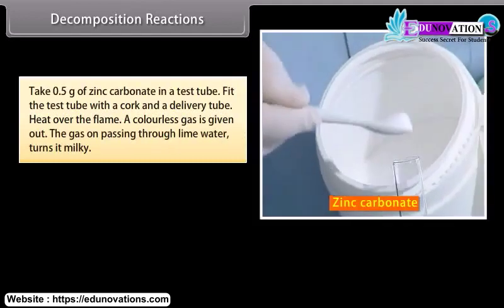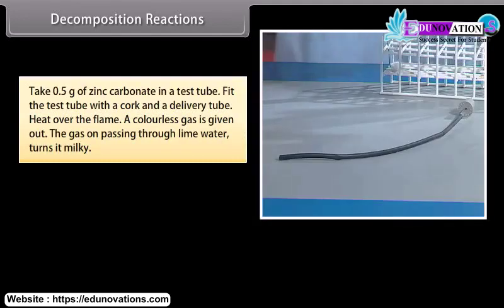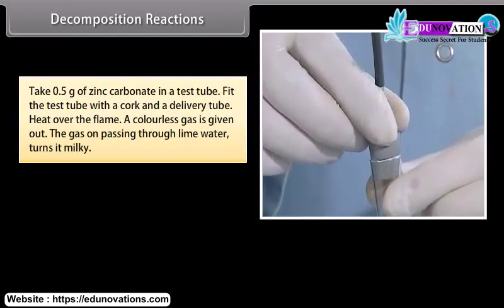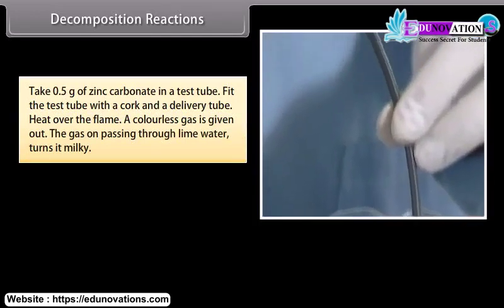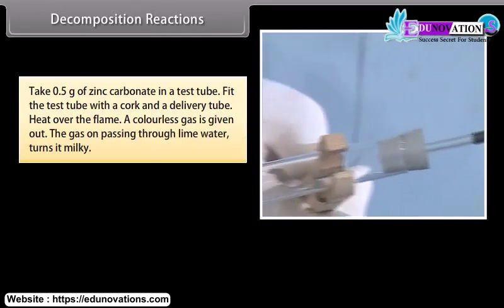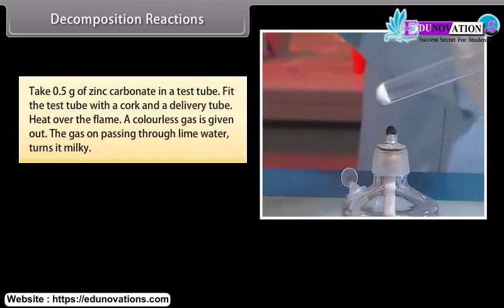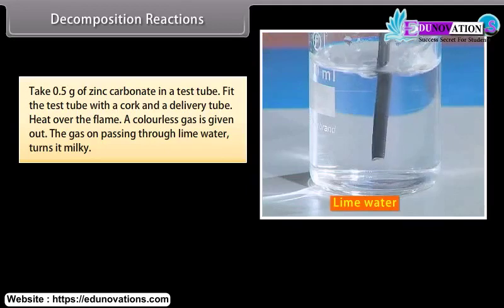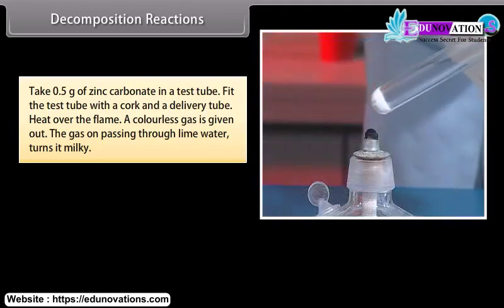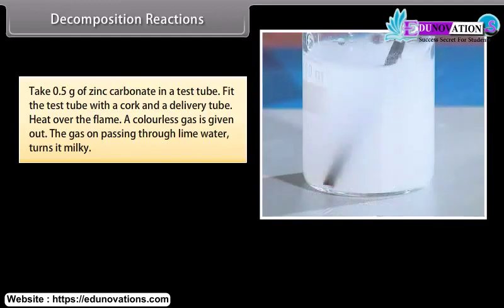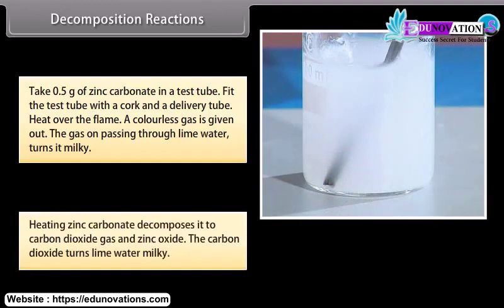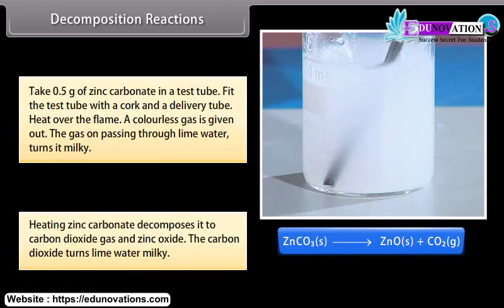Take 0.5 gram of zinc carbonate in a test tube. Fit the test tube with a cork and a delivery tube. Heat over the flame. You will see a colorless gas is given out. The gas on passing through lime water turns it milky. Heating zinc carbonate decomposes it to carbon dioxide gas and zinc oxide. The carbon dioxide turns lime water milky.